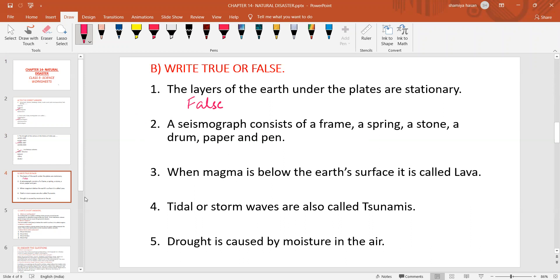A seismograph consists of a frame, a spring, a stone, a drum, paper and a pen. That is true.